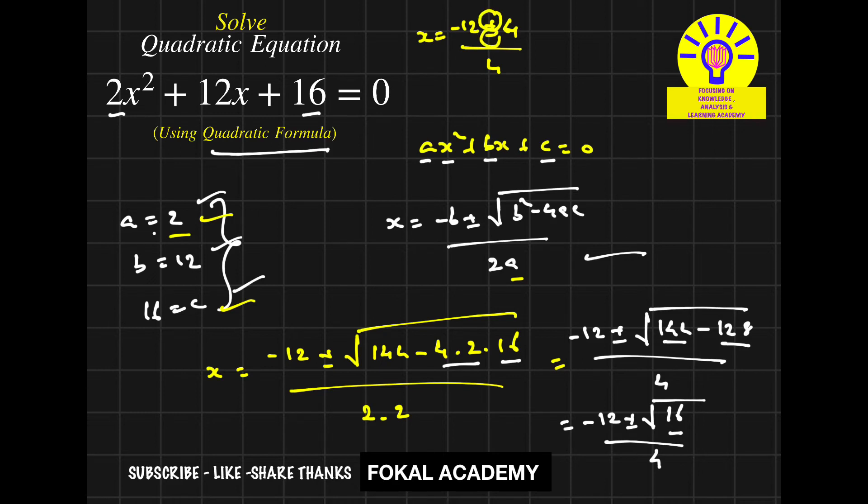So the roots are x = (-12 + 4)/4 for one root, and x = (-12 - 4)/4 for the other root.